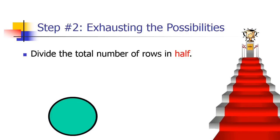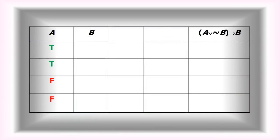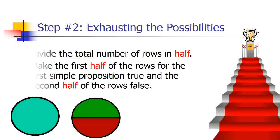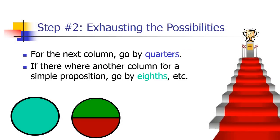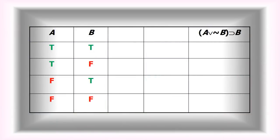Take the total number of rows, cut it in half. Make the first half of the rows for the first simple proposition true, the second half false. For the next column, you go by half of whatever you did before. Since we went by twos, I'm going to go by ones — one on, one off, all the way down. If there were another column, like if we had three simple sentence variables, then I'd go by eighths, etc.